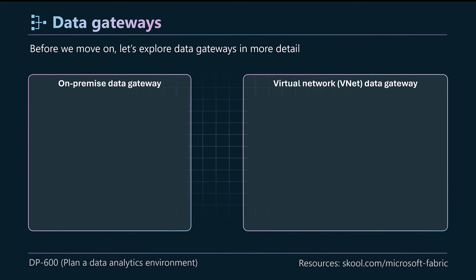There are two types of data gateways in Microsoft Fabric: the on-premise data gateway and the virtual network data gateway. A data gateway helps us access data that's otherwise secured. If data is on an on-premise SQL server, it gives a secure way to access and bring it into Fabric. Likewise, if data is behind a virtual network in Azure — like Blob Storage or ADLS Gen 2 — it provides a secure mechanism to access that data. I'll leave links to detailed setup videos in the school community.